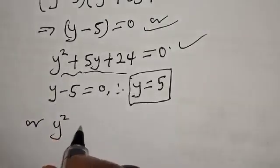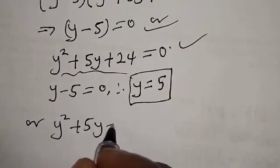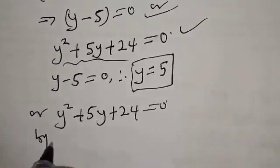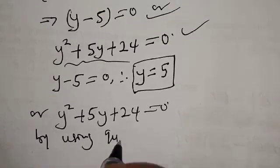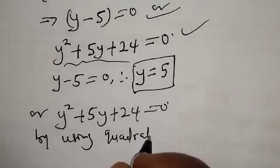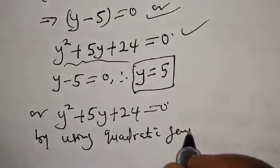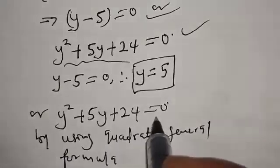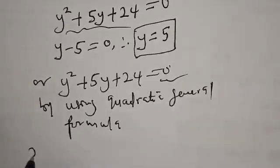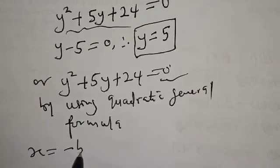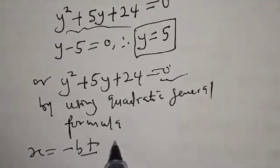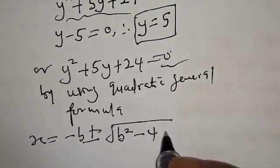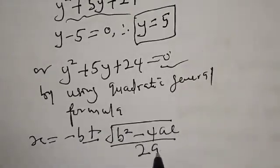For the second case, we have Y squared plus 5Y plus 24 equal to 0. We can use the quadratic formula: Y equals negative B plus or minus the square root of B squared minus 4AC, all over 2A.